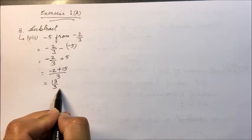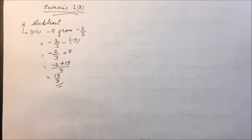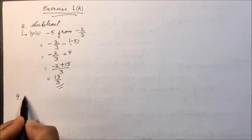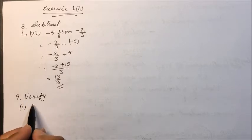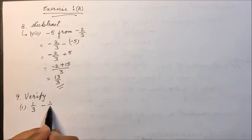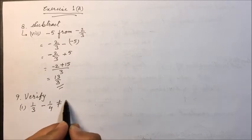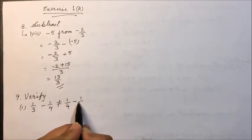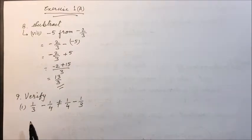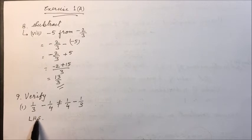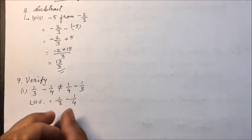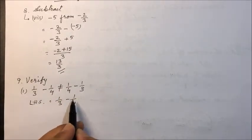Now the ninth question. First part: verify that 1 upon 3 minus 1 upon 4 is not equal to 1 upon 4 minus 1 upon 3. We have to verify that subtraction is not commutative. First, we take the left hand side: LHS equals 1 upon 3 minus 1 upon 4.